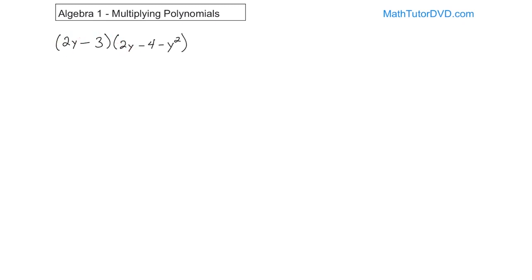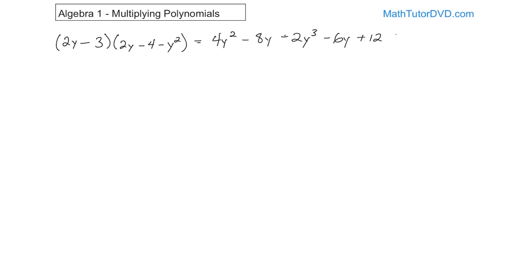So 2y times 2y gives positive 4y squared — multiplying y times y gives y squared. Then 2y times negative 4 gives negative 8y. Then 2y times negative y squared gives negative 2y cubed — multiplying y times y squared, we add the exponents. Now negative 3 times 2y is negative 6y. Then negative 3 times negative 4 is positive 12.